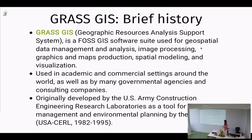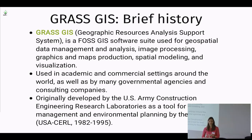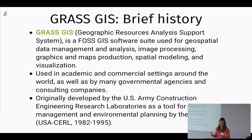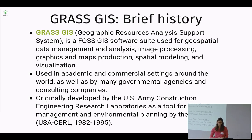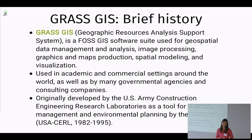GRASS GIS stands for Geographic Resources Analysis Support System. It's a FOSS GIS — free and open source software GIS — used for geospatial data management and analysis, image processing, graphics and map production, spatial modeling, and visualization. It is used in academic and commercial settings all around the world, and also by many governmental agencies and consulting companies. It was originally developed by the U.S. Army and the CERL laboratories as a tool for land management and environmental planning. It dates back to the 80s — it's the longest-standing free and open source GIS.